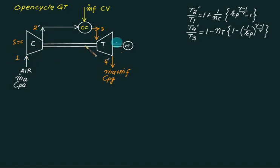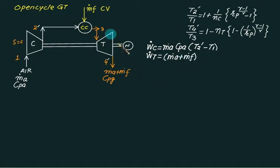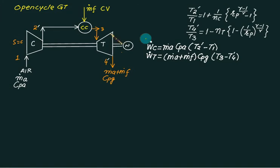For compressor power: W-dot-c equals m-dot-a multiplied by cp_a multiplied by (T2-dash - T1). For turbine power: W-dot-t equals (m-dot-a plus m-dot-f) multiplied by cpg multiplied by (T3 - T4-dash). These give the actual power required to drive the compressor and the actual power developed by the turbine, respectively.